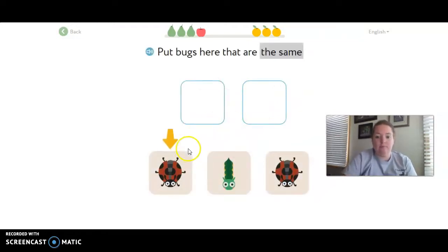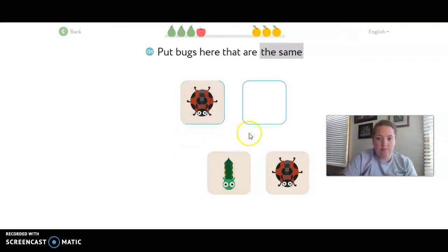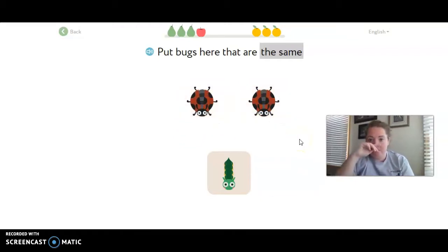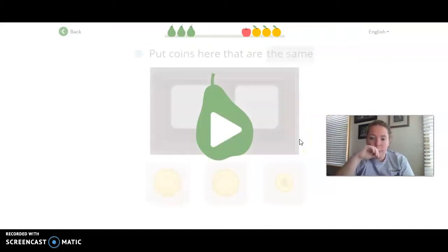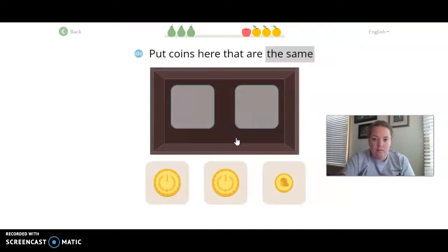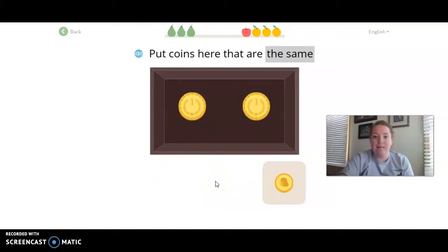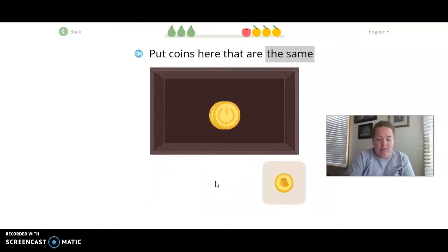Put bugs here that are the same. So, then they've got to move the bugs that are the same. Put coins here that are the same. So, this works on sorting is really what this is. Understanding that things are not always the same. They are different. That's how we sort them.